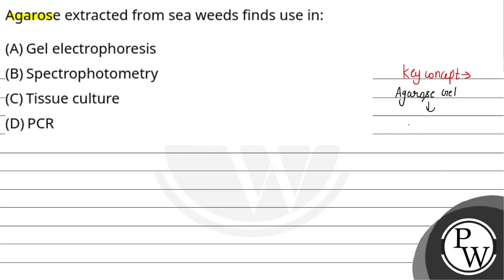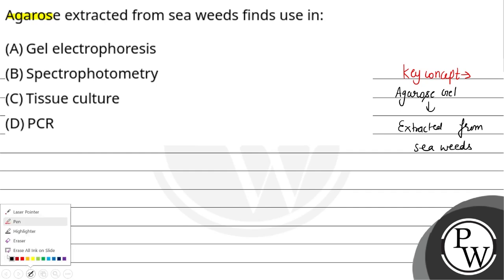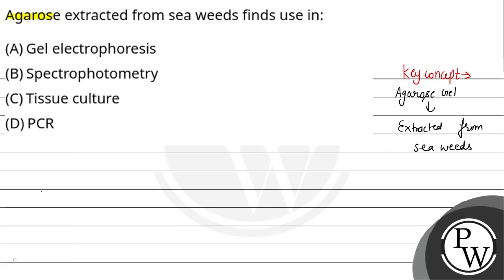Jo agarose gel hai, it is extracted from seaweed — samundari kharpatwaar se extract kiya jata hai. Aur iska use kisme aata hai? Agarose gel ka use kiya jata hai electrophoresis ke andar.